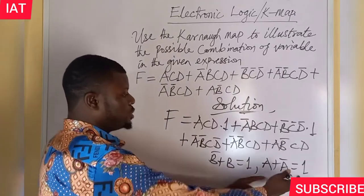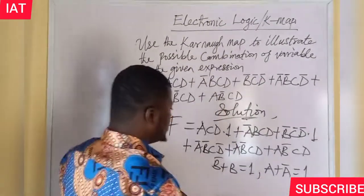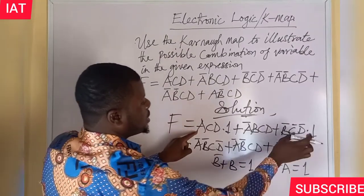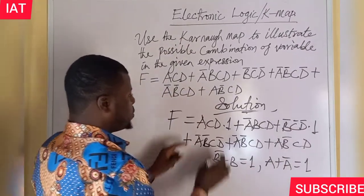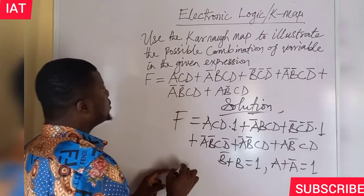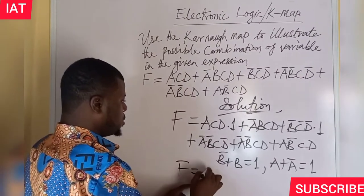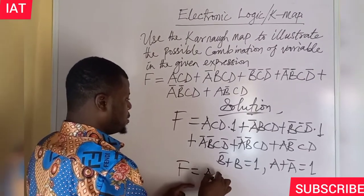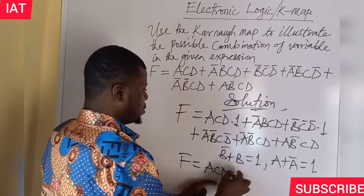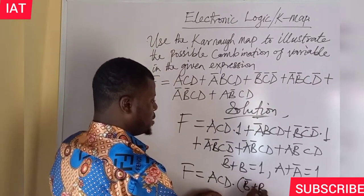The position is not a problem. So if that be the case, we can substitute into the first and third terms so that we can get the B variable associated with them. F now will be equal to A C D dot (B-bar plus B).